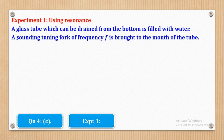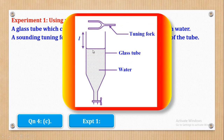Next, a sounding tuning fork of known frequency F is brought to the mouth of the tube. This is the tuning fork of known frequency and this is the mouth of the glass tube. Initially the water level is at the very top of the glass tube since they say it is filled with water.